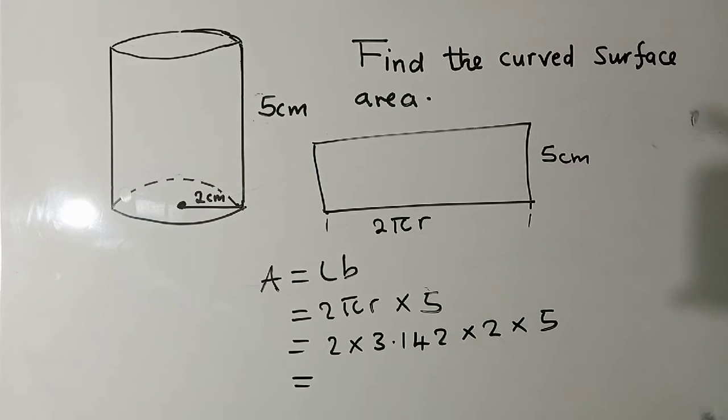So you can punch on your calculator. When you punch, what are you getting? So 2 times 3.14, 2 times 2 times 5, I'm getting 62.